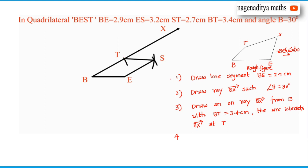Fourth step: Draw an arc from point T with radius ST equal to 2.7 centimeters.